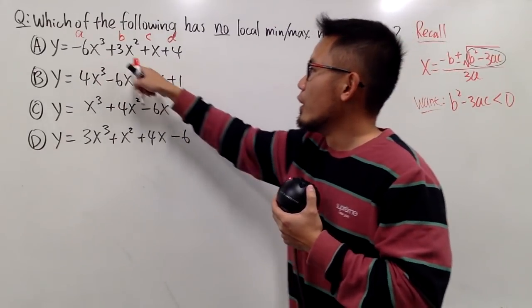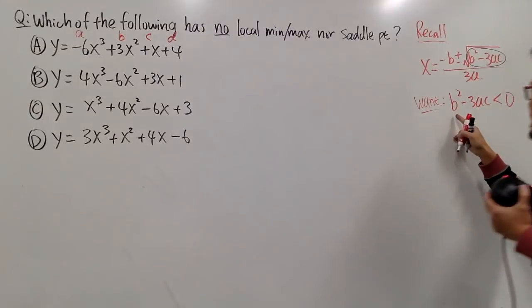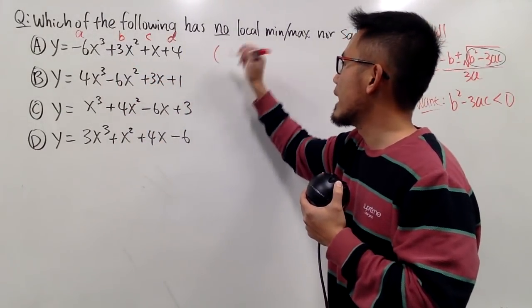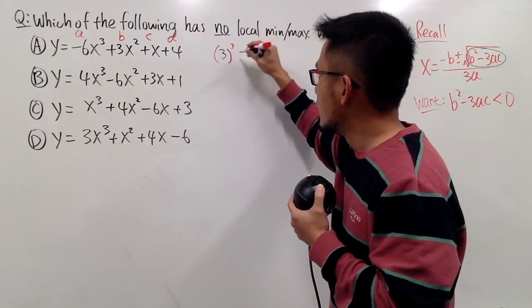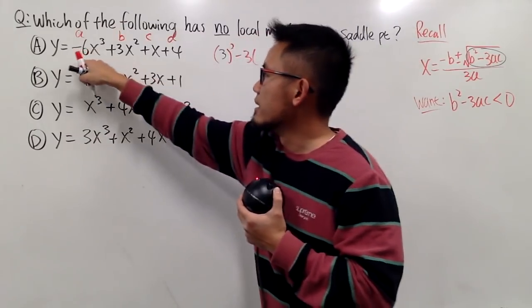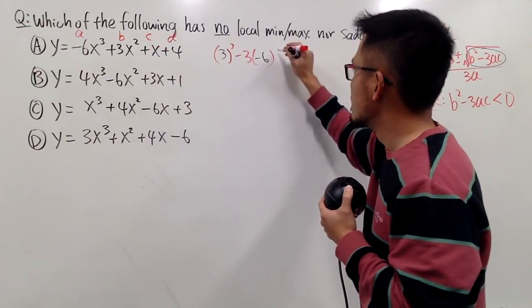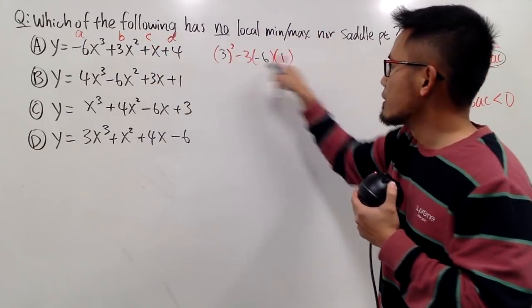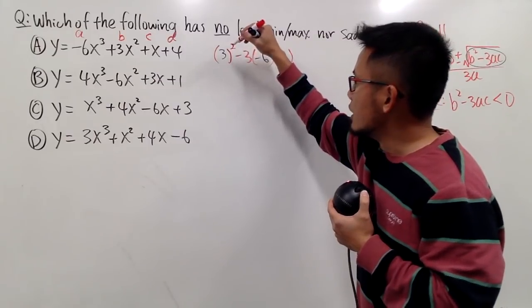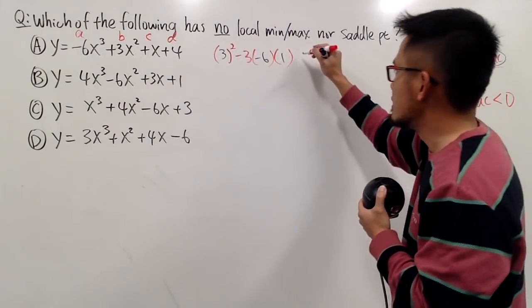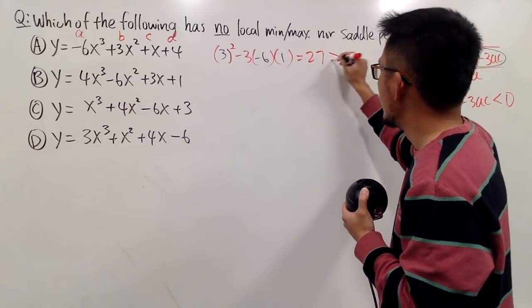Let's take a look at the first one. We have to get b squared minus 3ac, so we have 3 squared first. We have 3 squared minus 3 times a which is negative 6, and then c in our case is the coefficient of x which is 1, so times 1. Work this out. This is 9 and then this is plus 18, so this is positive 27.